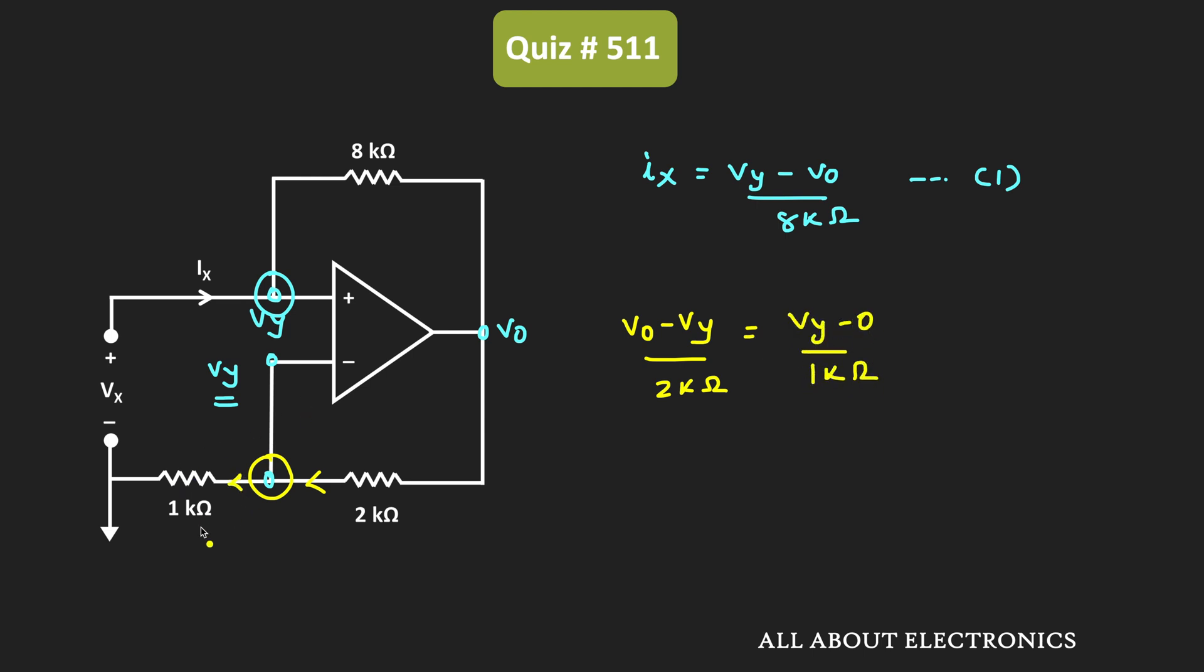That is this current. Or we can say that this V0 minus Vy is equal to 2 Vy. That means this Vout is equal to 3 Vy.